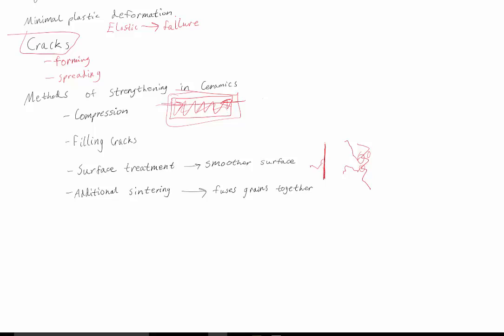Another method of strengthening would be additional sintering. Sintering is when we take grains of sand, make them really hot, and then they'll fuse together. So initially, maybe the grains will be fused together like this. And a crack could easily form in this gap right here,